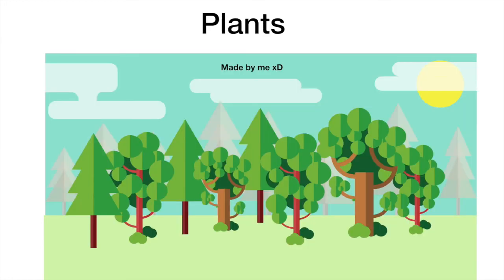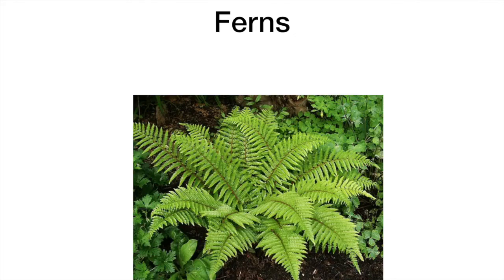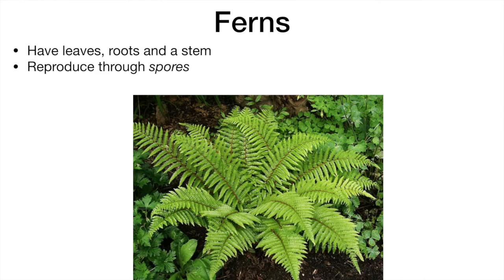Plants too can be divided into different types. We should know the difference between ferns and flowering plants. Ferns have leaves, roots and stems but do not reproduce through flowers — instead, they reproduce through spores.